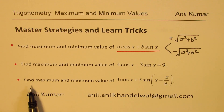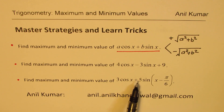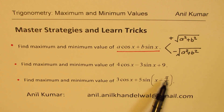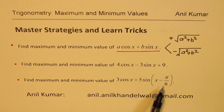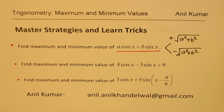Here in part 3, to find maximum and minimum, we have a very different function: 3 cos x plus 5 sin(x minus π/6). If you expand this, you can actually get that A cos x plus B sin x form, and then using this result, you can quickly get to the solution.